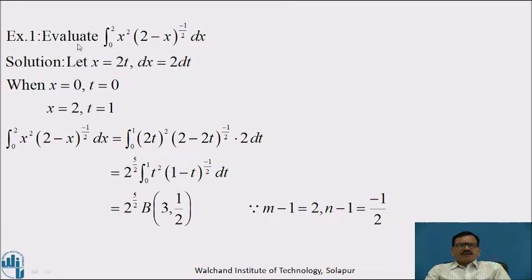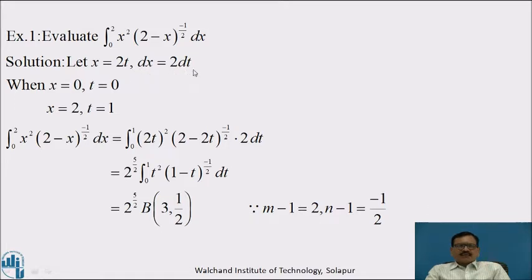Now we will see the example. Evaluate the integral: integration from 0 to 2 of x squared into bracket 2 minus x raised to minus 1 by 2, dx. To express this in terms of BETA Function, we need to bring the term 1 minus x. For that, the proper substitution is x equal to 2t, that is, dx equal to 2 dt. Accordingly, we have to change the limits. When x is equal to 0, we get t equal to 0, and when x is equal to 2, we get t equal to 1.